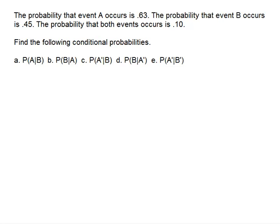In this example, we have two given events for an experiment, called A and B. We know the probability of A is 0.63, the probability of B is 0.45, and the probability that A and B both occur together is 0.10.